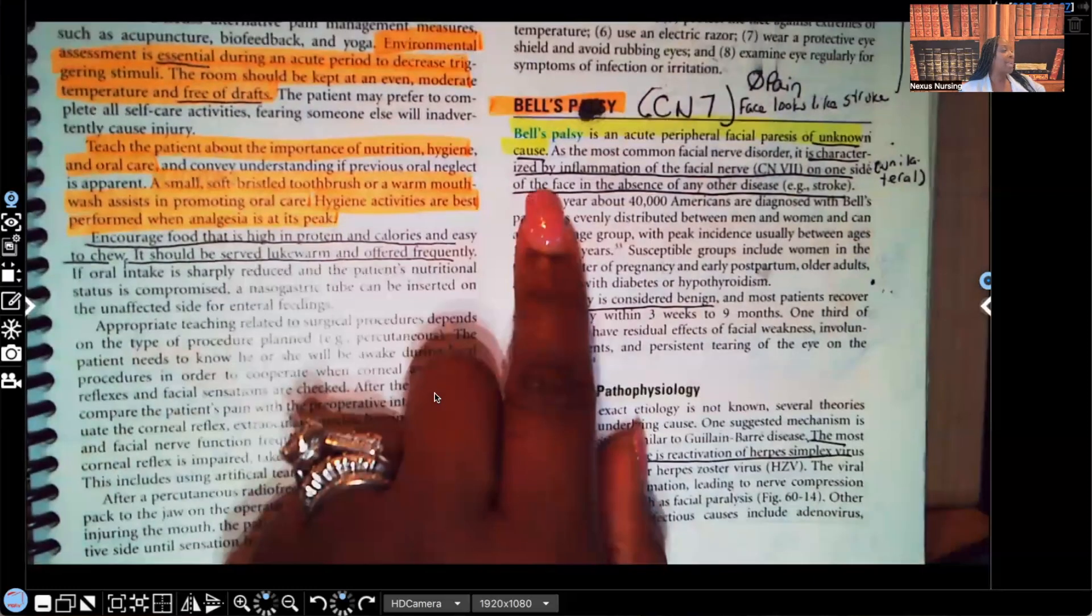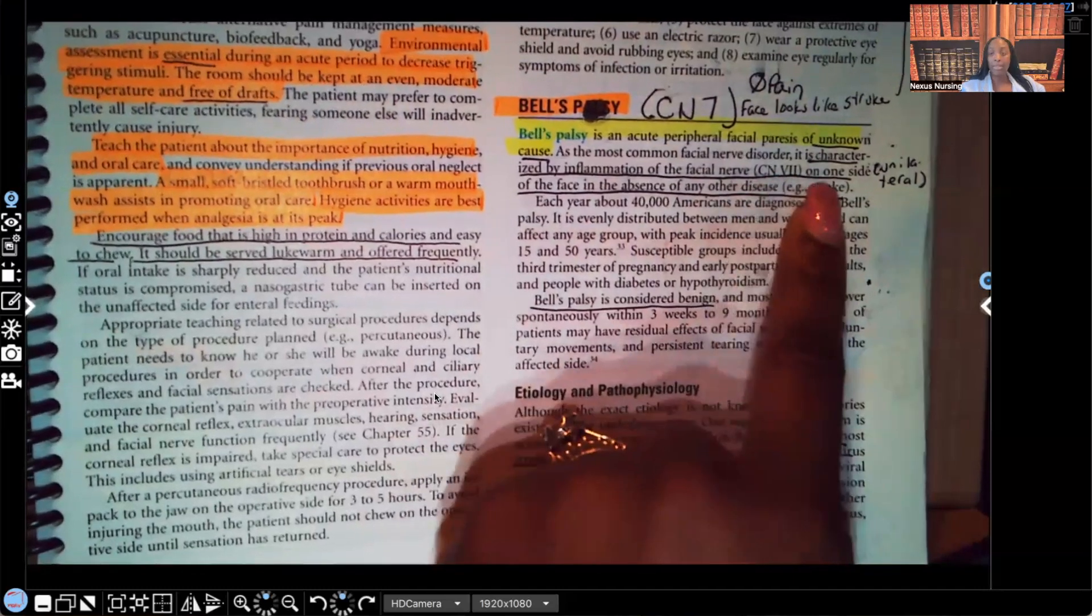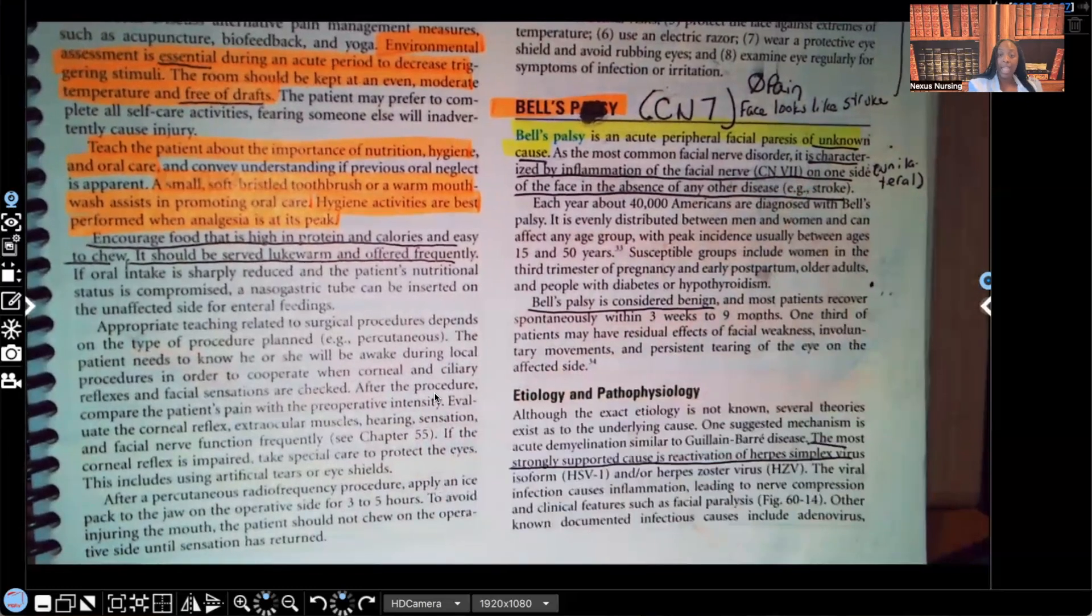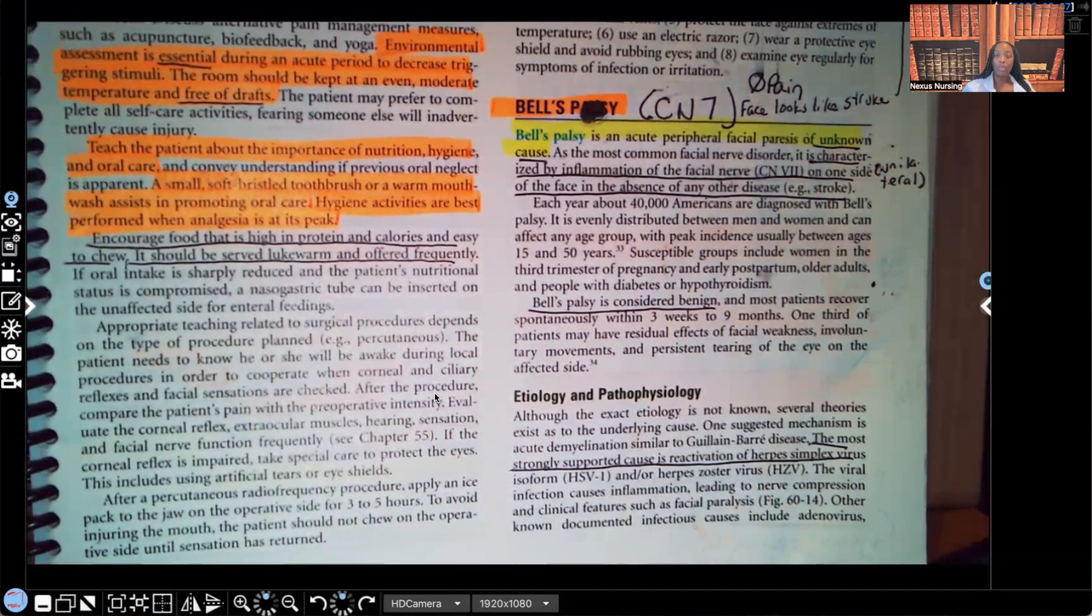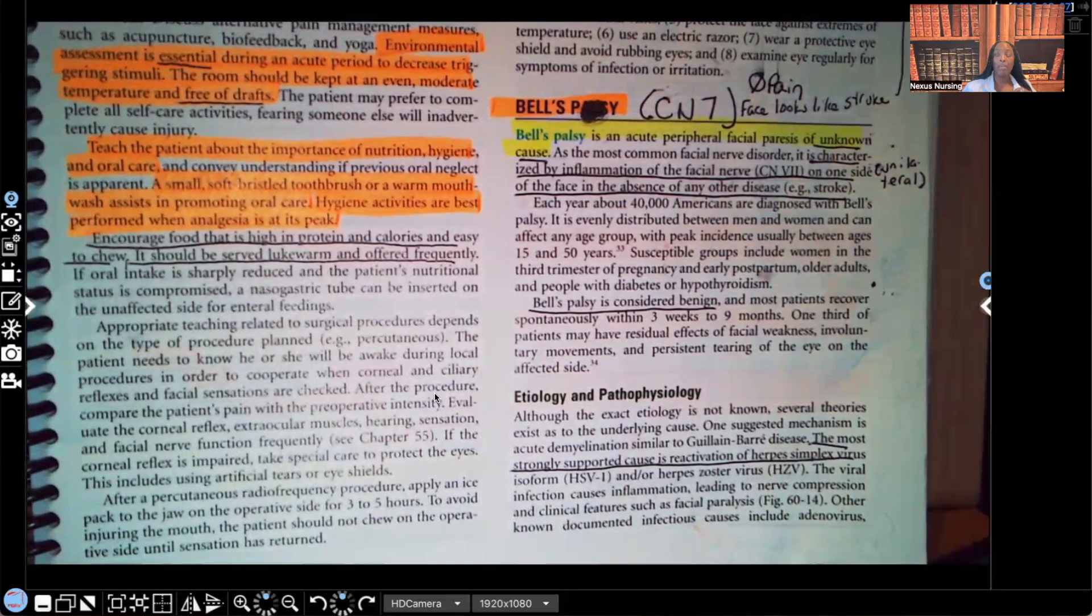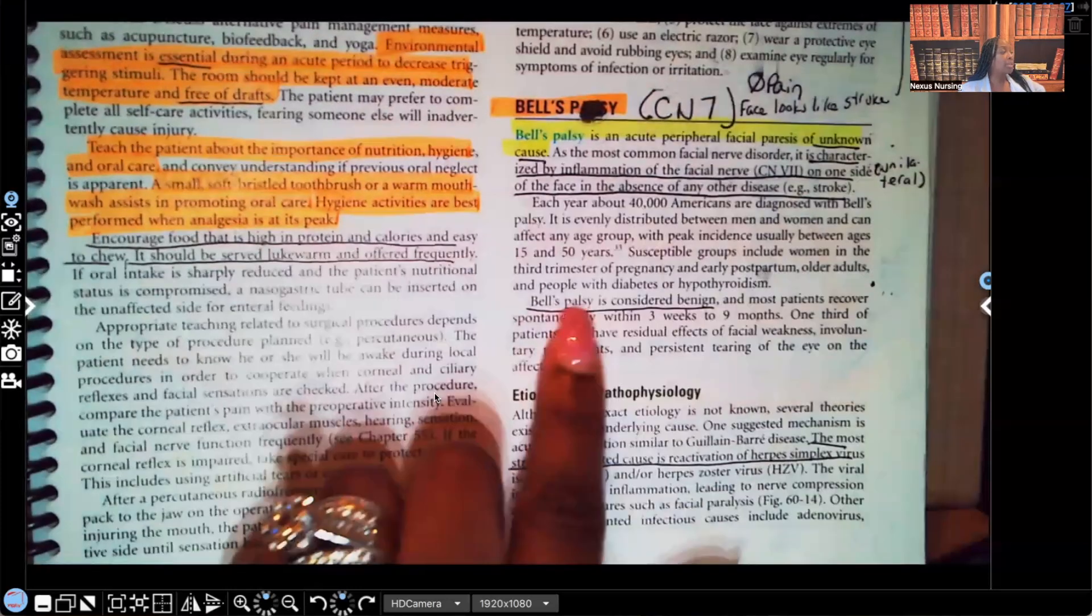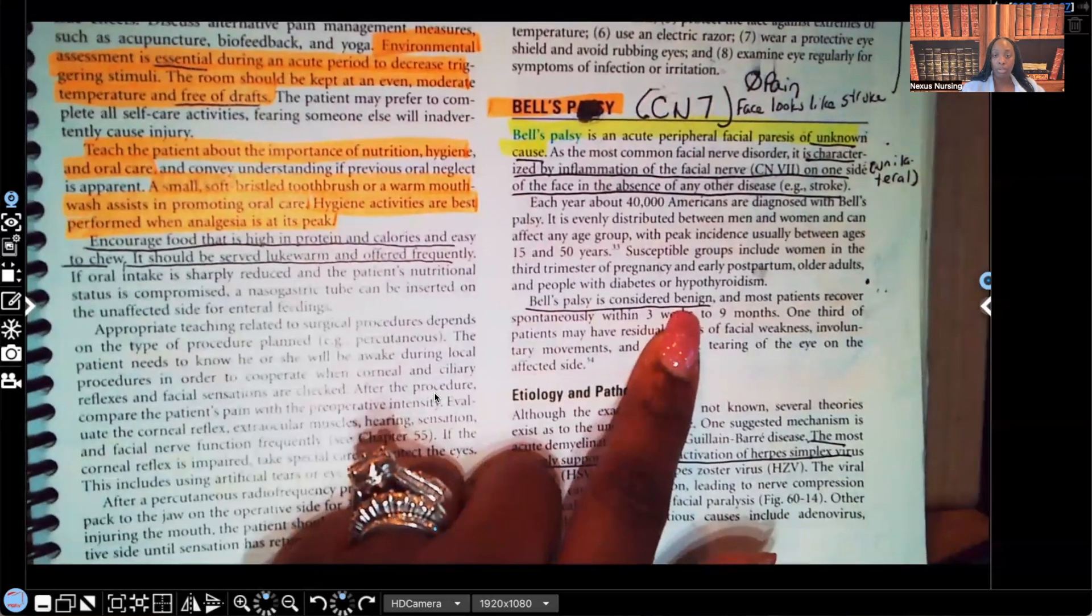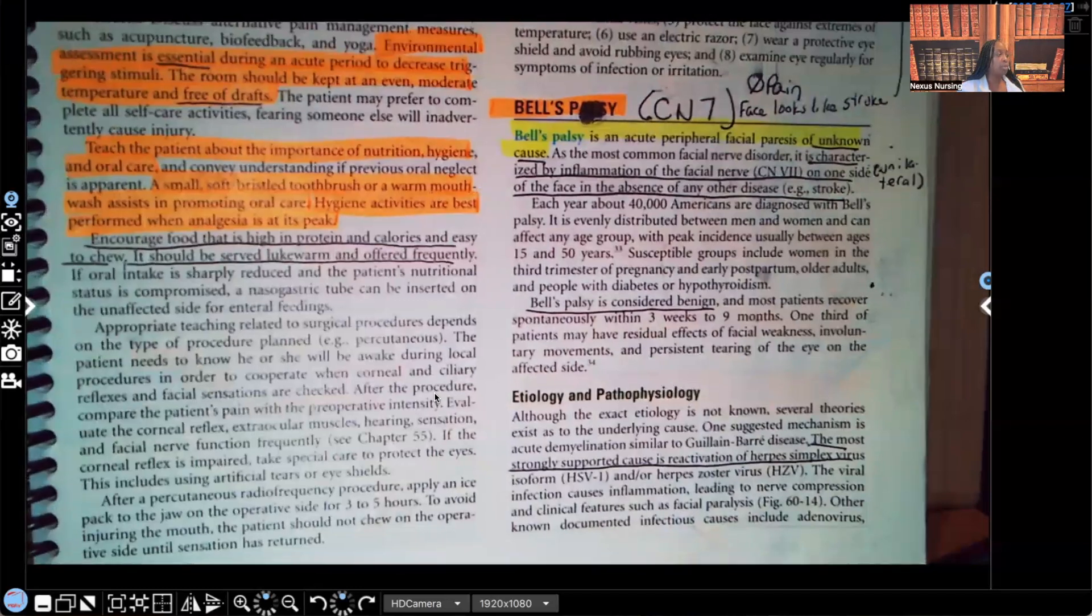It's characterized by inflammation of the facial nerve, cranial nerve 7. You need to know that. On one side, meaning unilateral of the face in the absence of any other disease, such as a stroke. So the patient's having inflammation of the cranial nerve 7, one-sided facial weakness, and there's no other disease or disorder that is present that may be causing this. Bell's palsy is considered benign. It won't kill you. Most patients recover spontaneously within three weeks to nine months.